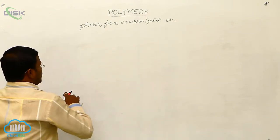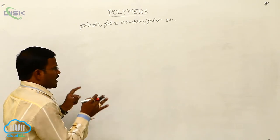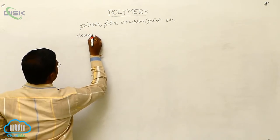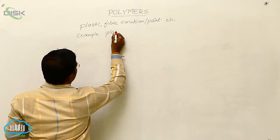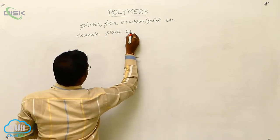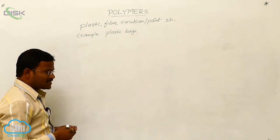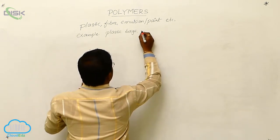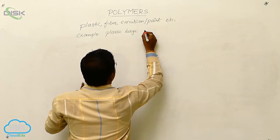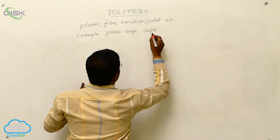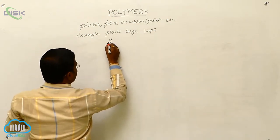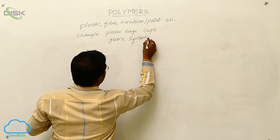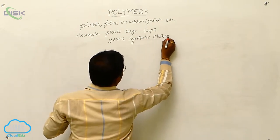In our daily life, various types of chemical substances used by us are polymers. Examples include plastic bags, plastic buckets, cups, some gears, synthetic cloths, etc. All these are polymers.